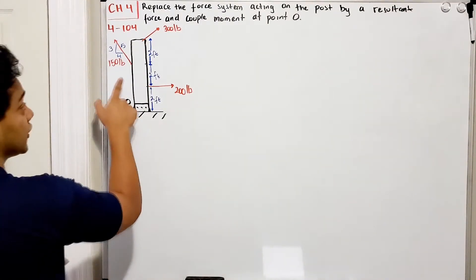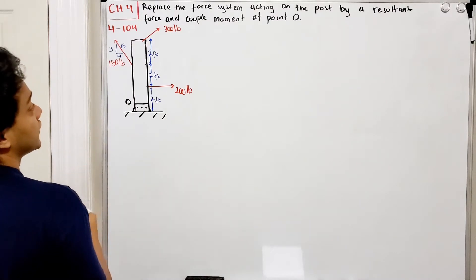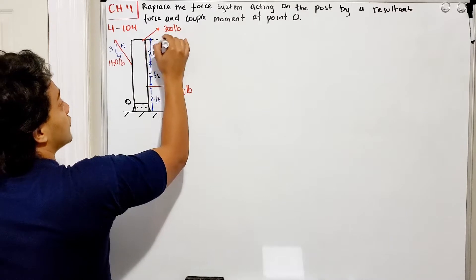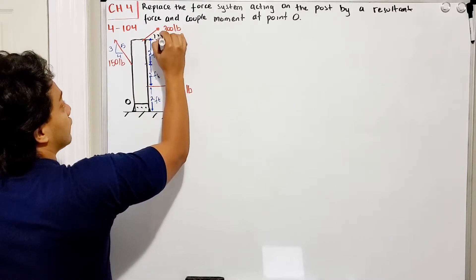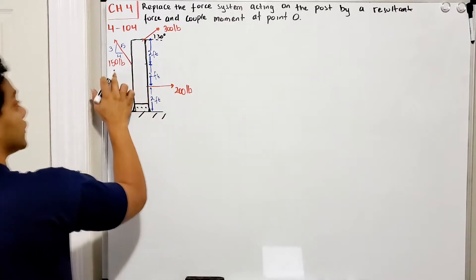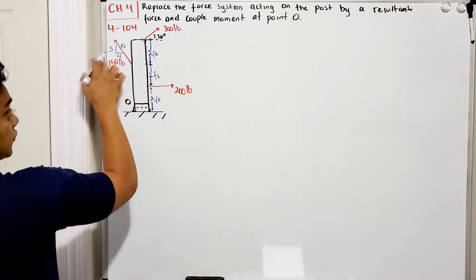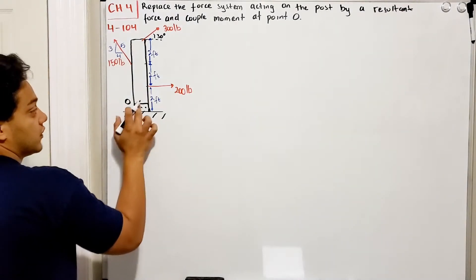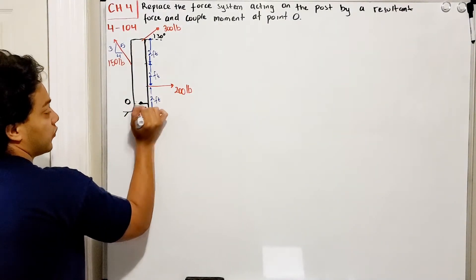We got this post over here with three forces. The 300 pounds is described by a 30 degree angle, 200 pounds going to the right, and 150 pounds described by a 3-4-5 triangle. Our point O is over here at the base of the post.